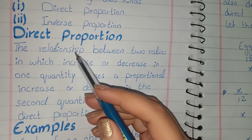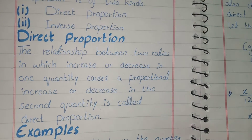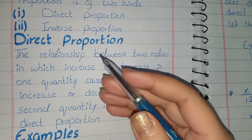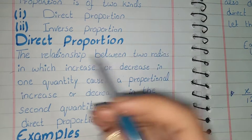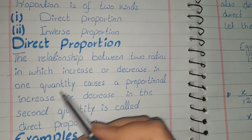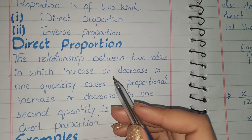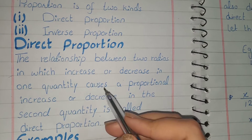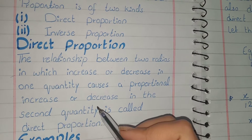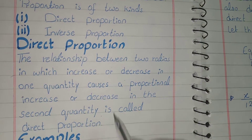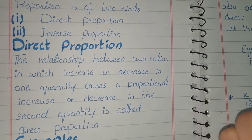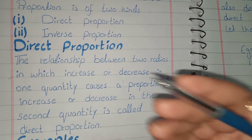In direct proportion, if one quantity increases then the other quantity also increases, and if one quantity decreases then the other quantity also decreases. This is the relationship between two ratios in which an increase or decrease in one quantity causes a proportional increase or decrease in the second quantity. We call this direct proportion.